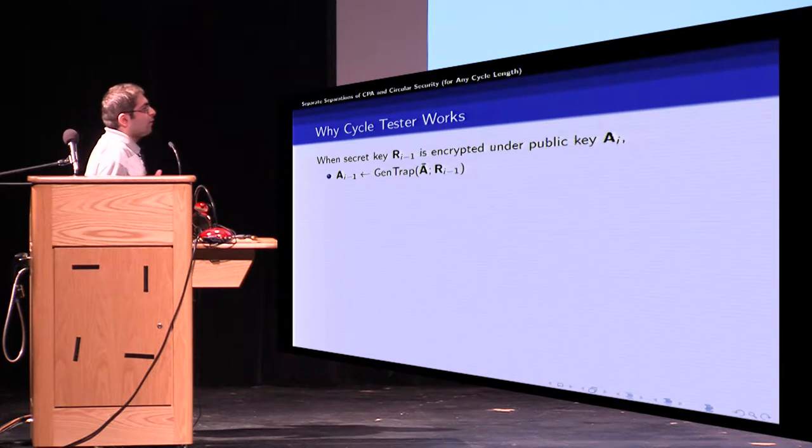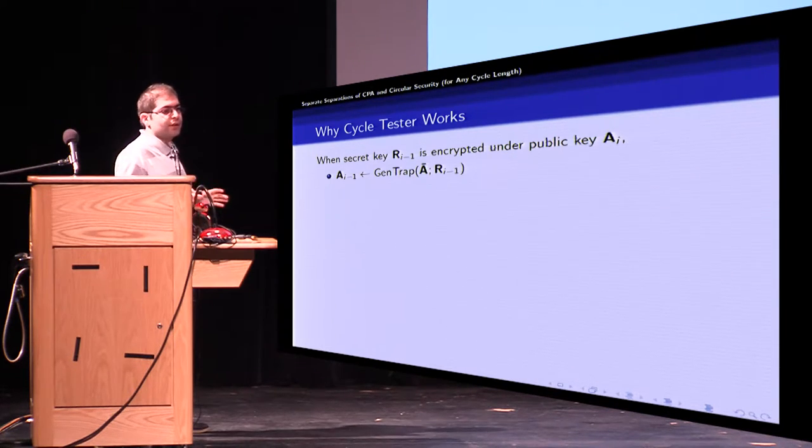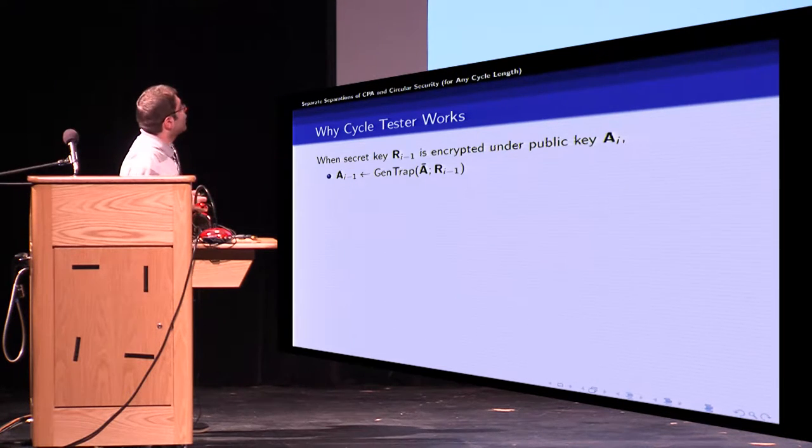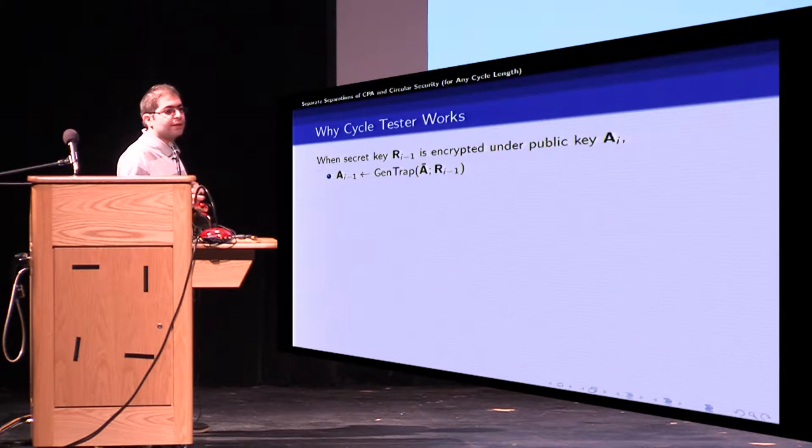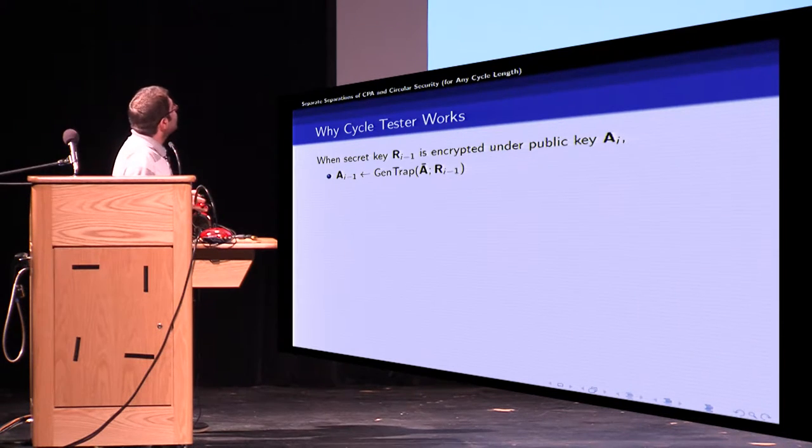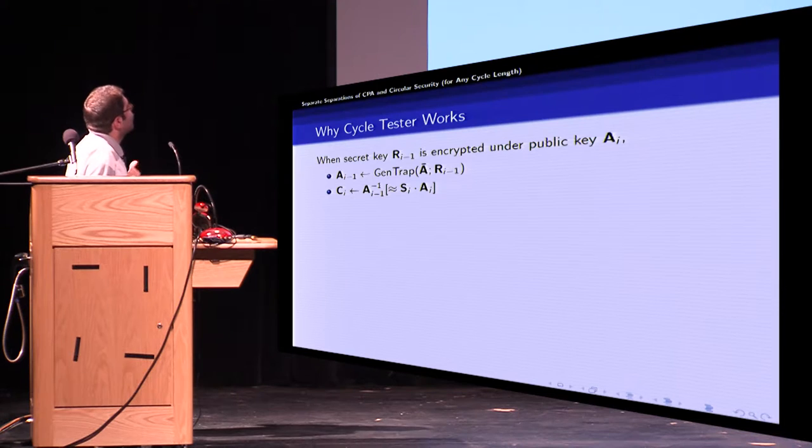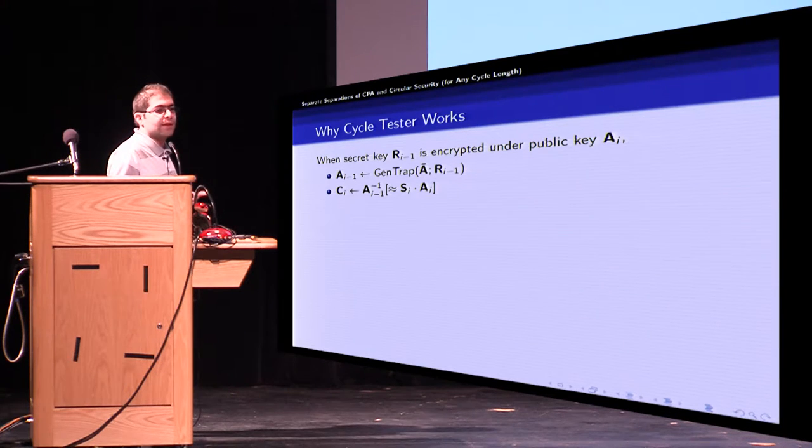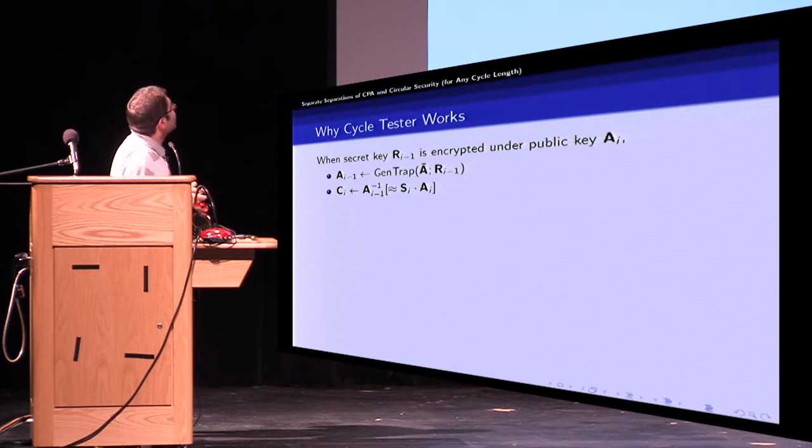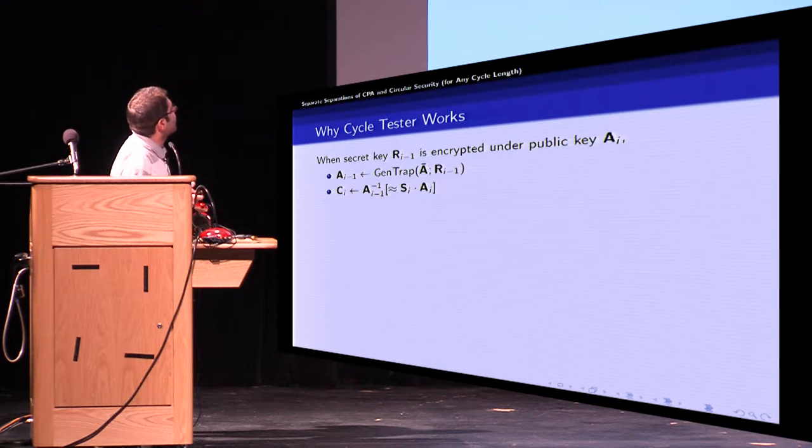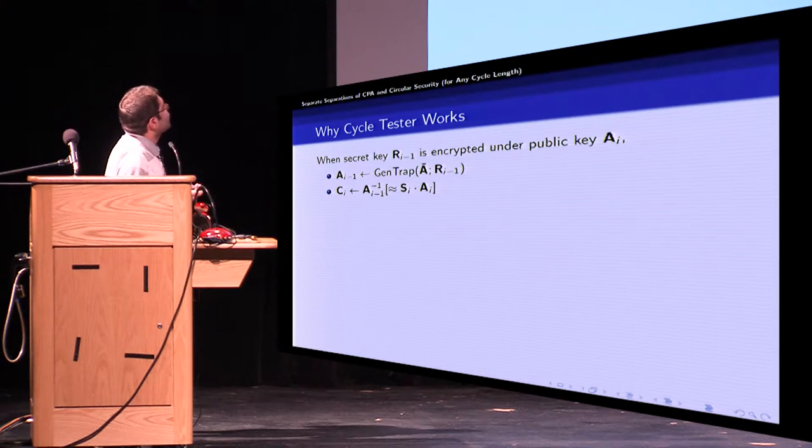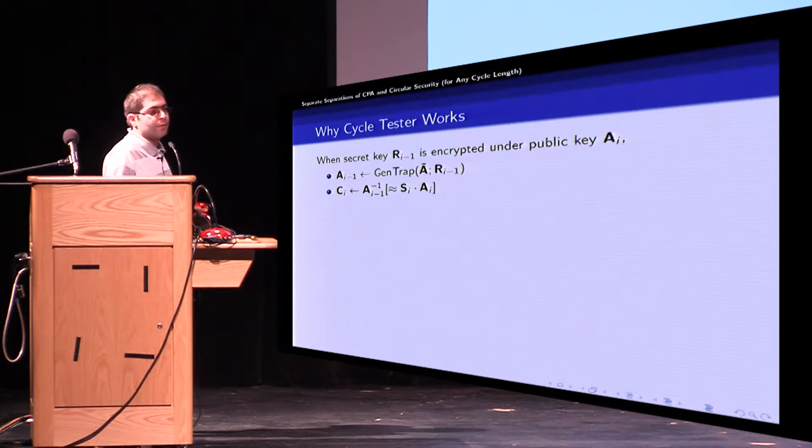Okay let's see why cycle tester works. First when we encrypt secret key R_i-1 on the next public key A_i we run GenTrap on A bar and R_i-1 to get A_i-1 and then the ciphertext would be A_i-1 inverse of noisy S_i A_i or again the ciphertext can be viewed as Gaussian preimage of noisy LWE sample.